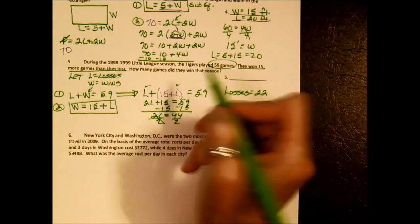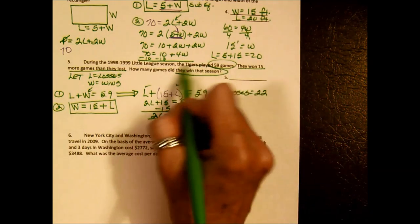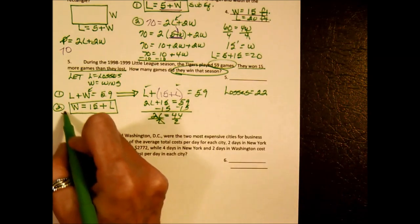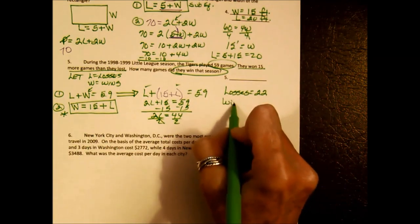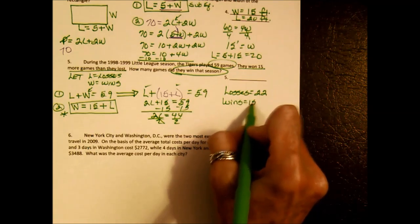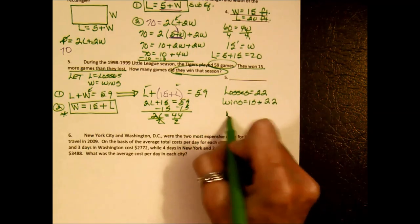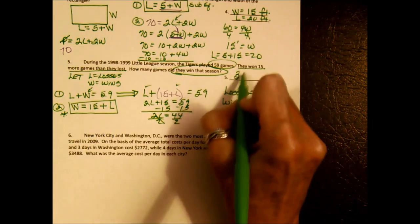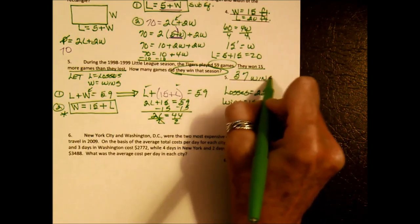But the question asks how many they won. Go back to the substitution equation: wins equal 15 plus the losses, so wins equal 15 plus 22, which is 37 wins.